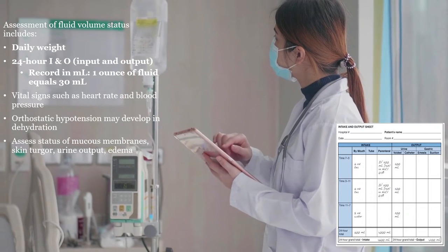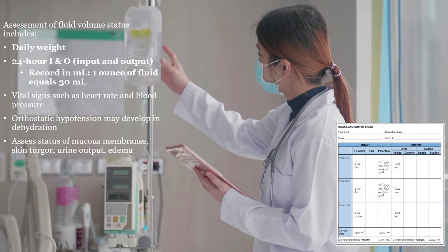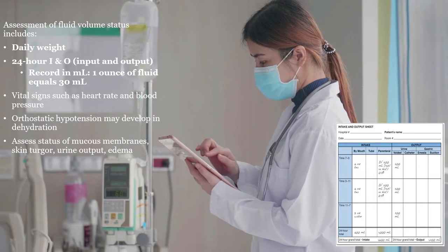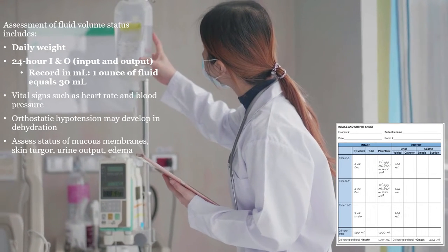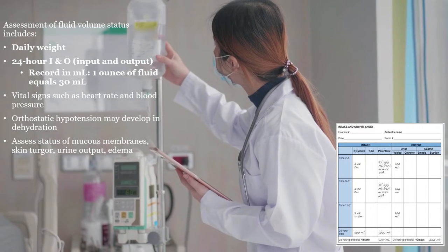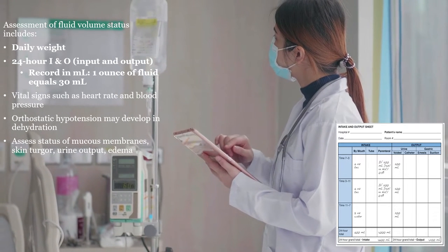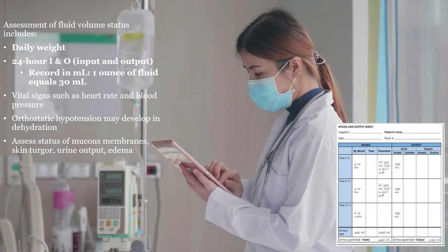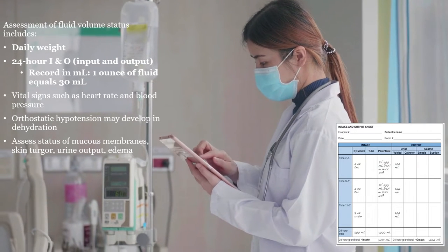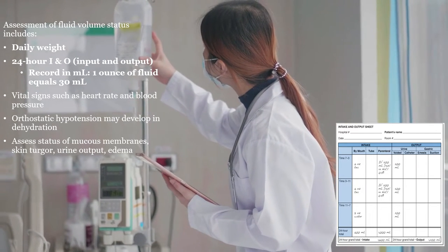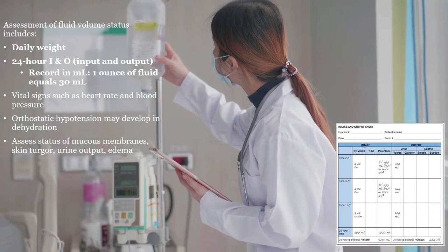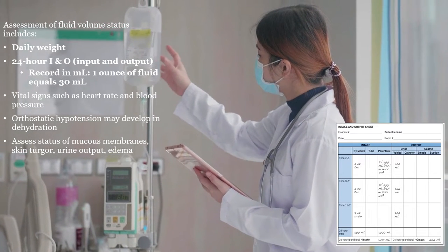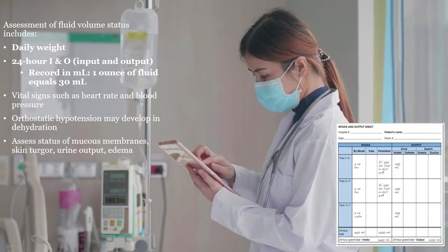How do you assess the volume status in a patient? In the hospital, you can do daily weights - most hospital beds allow this. Keep good records of 24-hour input and output of fluids. Keep track of vital signs as tachycardia and hypotension can be signs of dehydration. Orthostatic hypotension, or a drop in blood pressure with standing, can be a sign of dehydration, but also blood loss. If urine output begins to drop, then there could be dehydration as well. If there is edema forming and daily weights are going up, then think about volume overload.